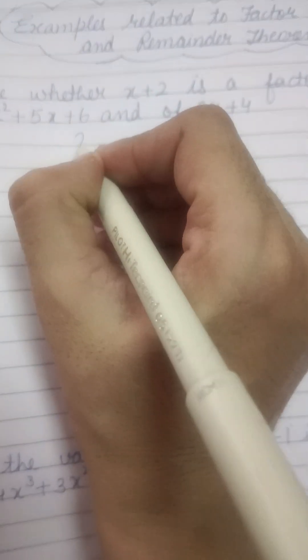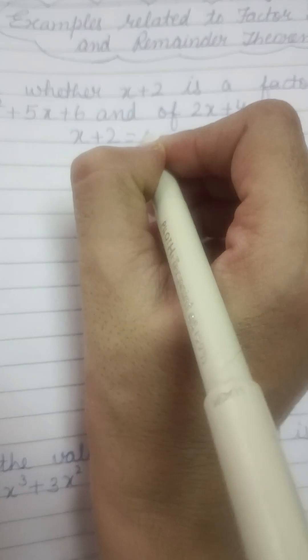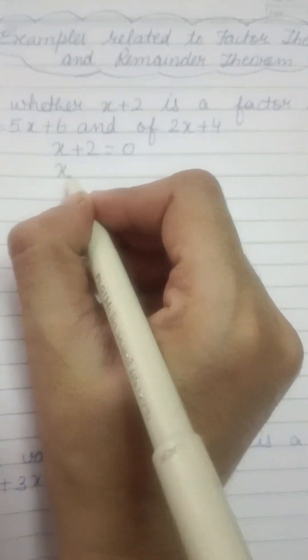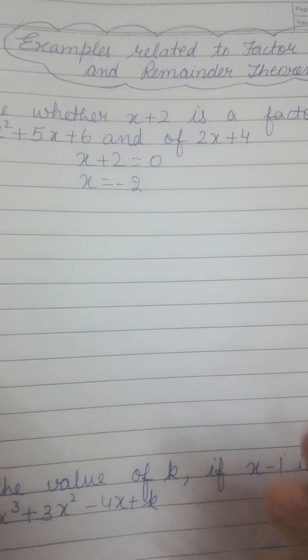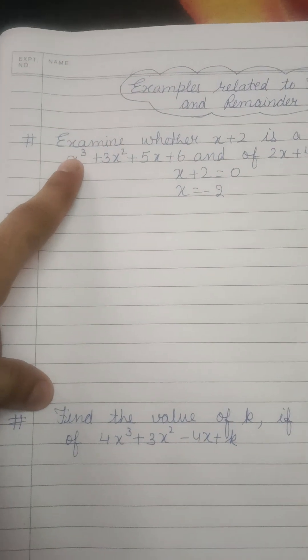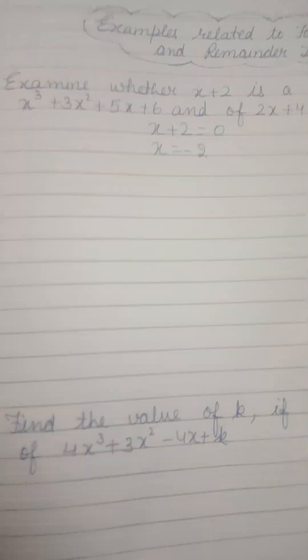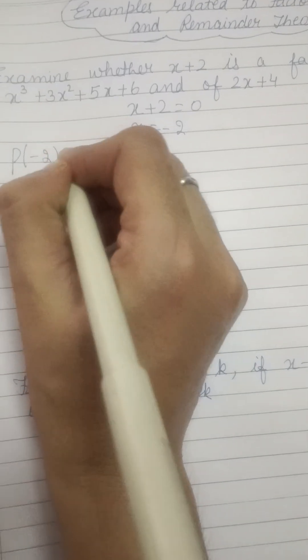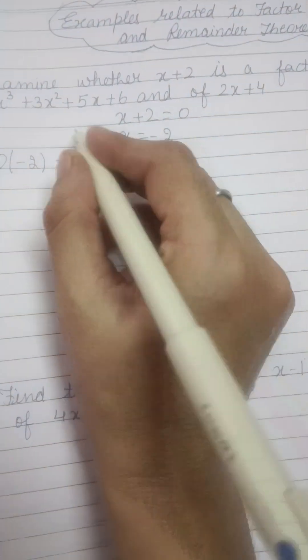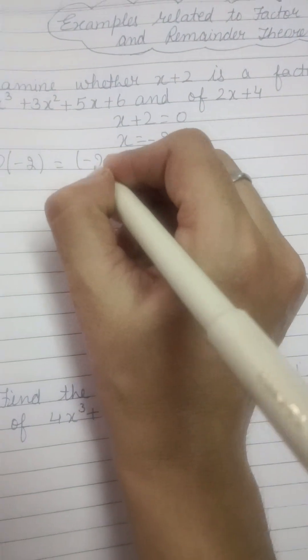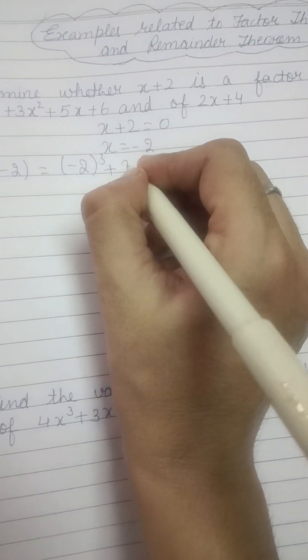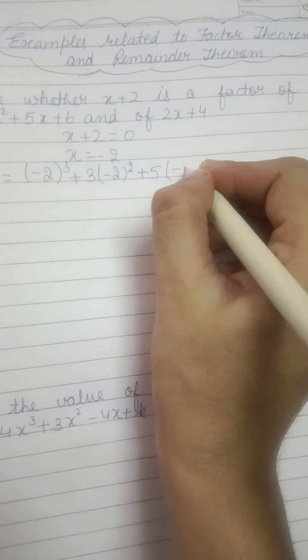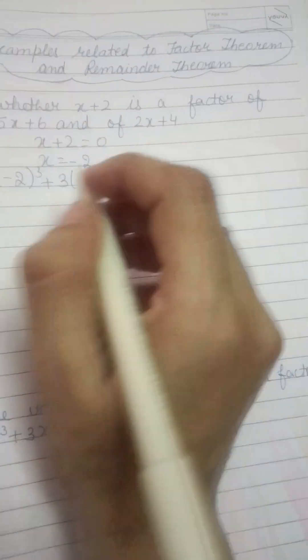We will be able to see that the value of x plus 2 is a factor. So minus 2 will be equal to minus 2 cube plus 3 minus 2 square plus 5 minus 2 plus 6.